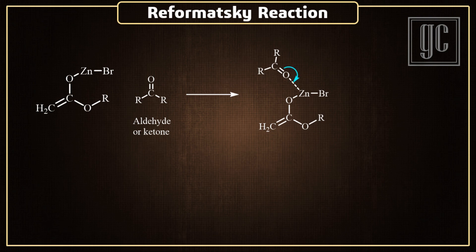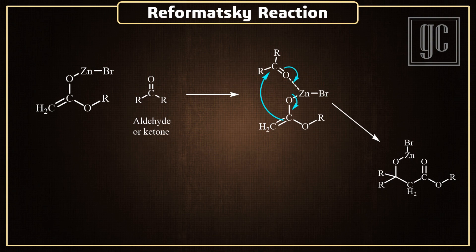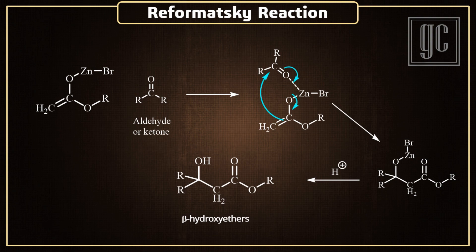Now, the pi electrons of the carbonyl are transferred to zinc, and as a result, rearrangement of the sigma and pi electrons takes place. The double bond of the enolate attacks on the carbonyl of the ketone or aldehyde, and this intermediate is formed. Now, in the presence of acid, zinc is replaced by a hydrogen atom, and the final product, beta-hydroxy esters, are formed.